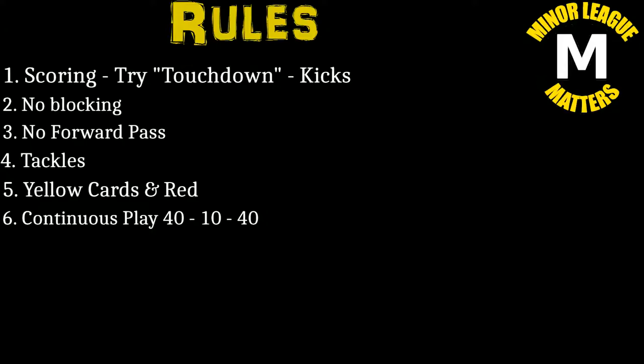They score what they call a try, which is the equivalent of a touchdown. For those who don't know why we call it a touchdown — the reason is because in rugby you actually have to touch the ball down in the end zone to score. If you run into the end zone and somebody shoves you out the back, you didn't score because you didn't touch the ball to the ground. The ball goes back into play. When you score a try, you run into the end zone and touch the ball down, and that gives you five points.